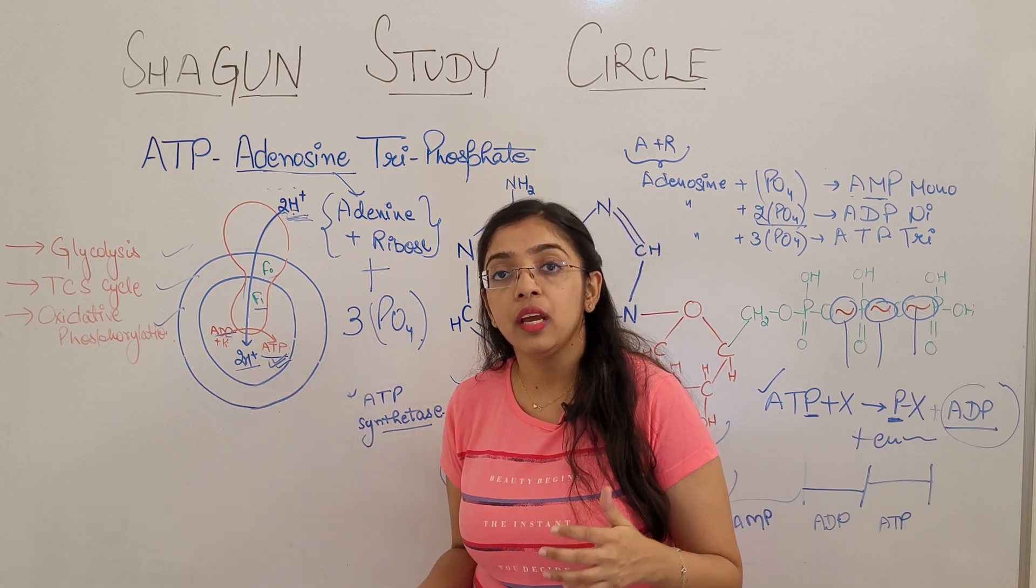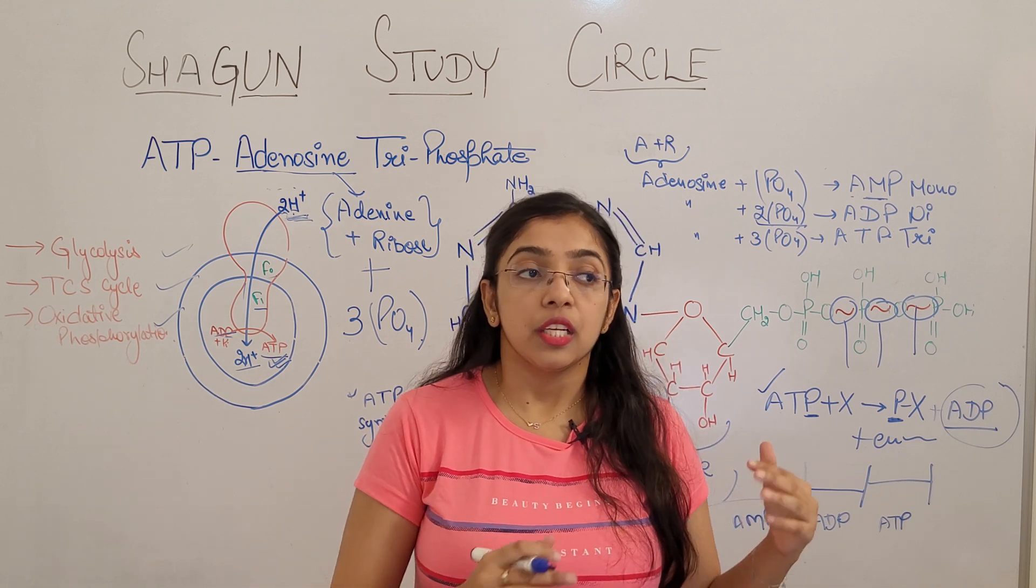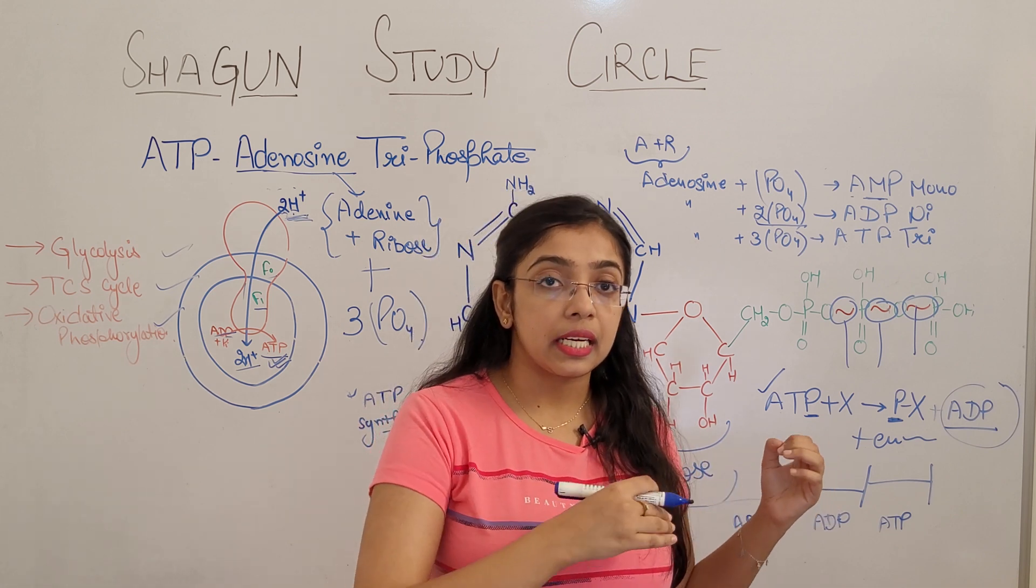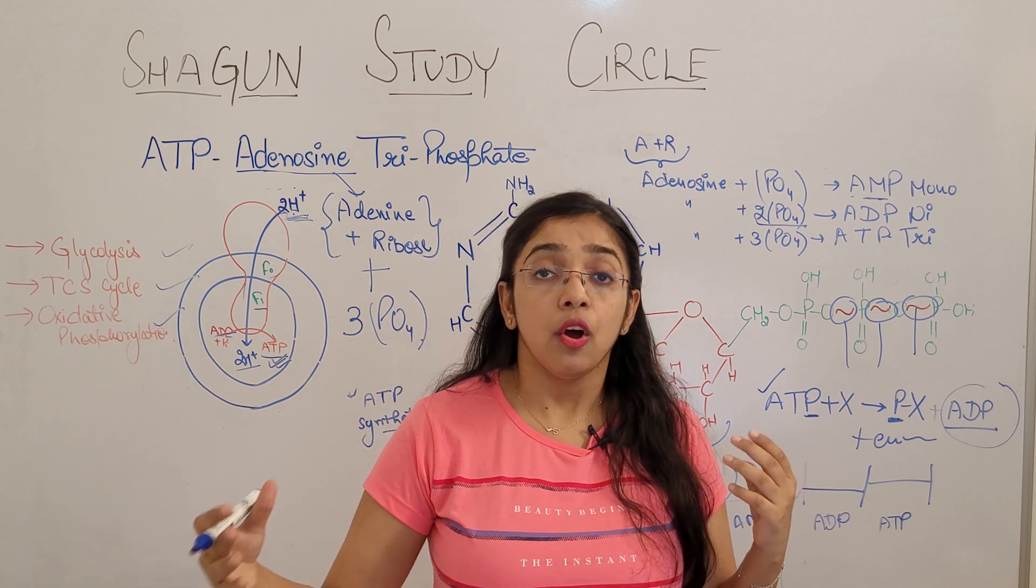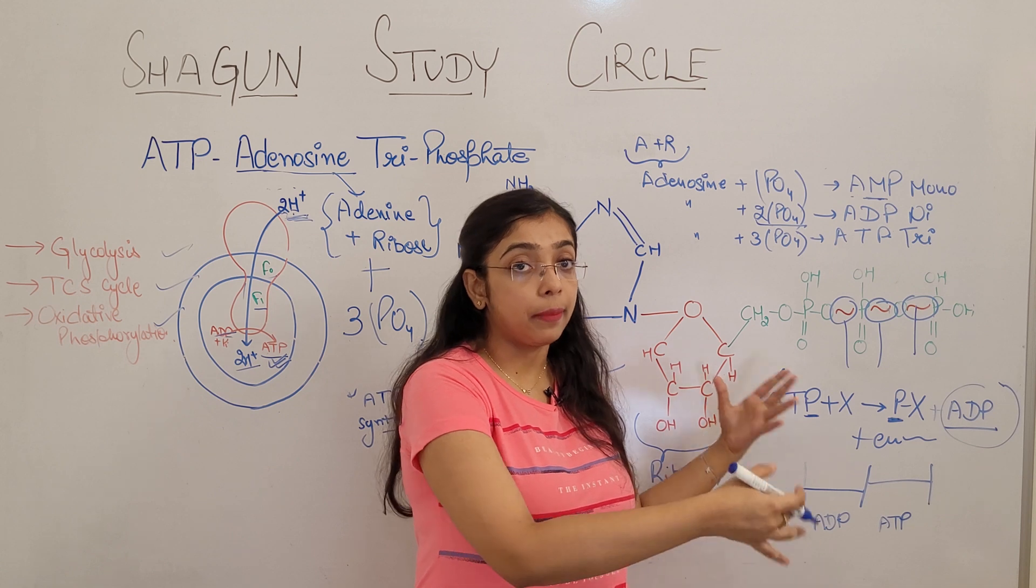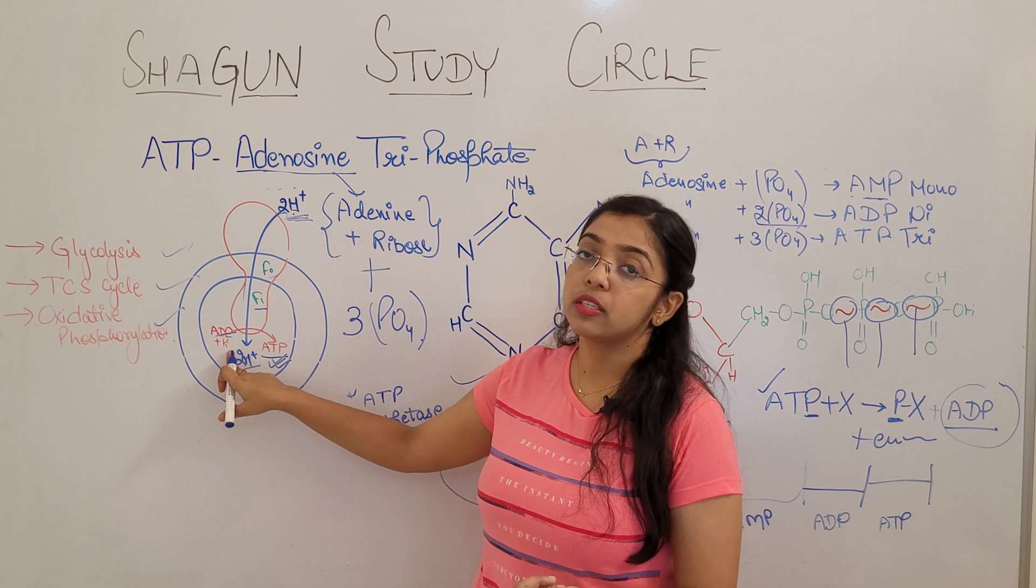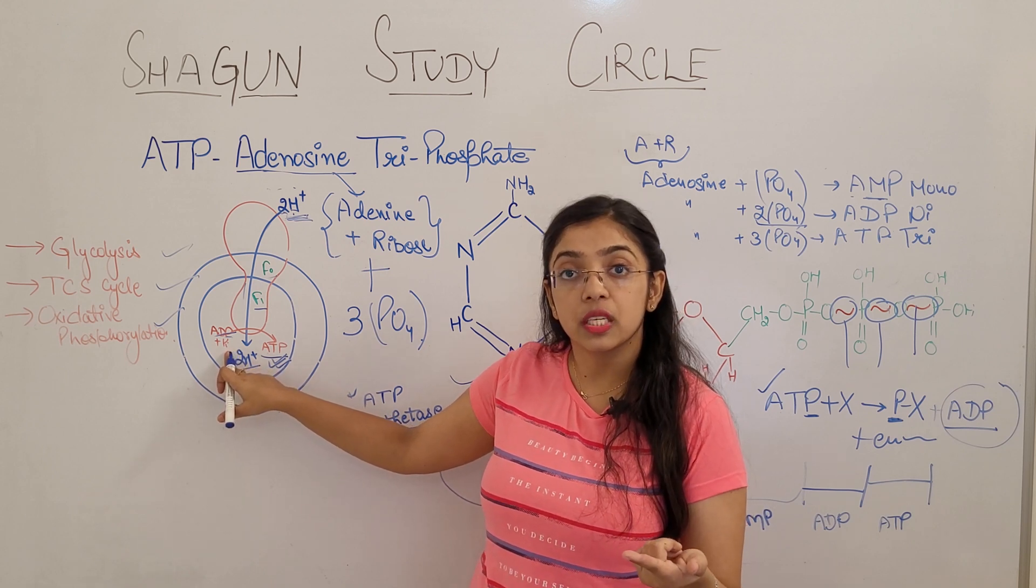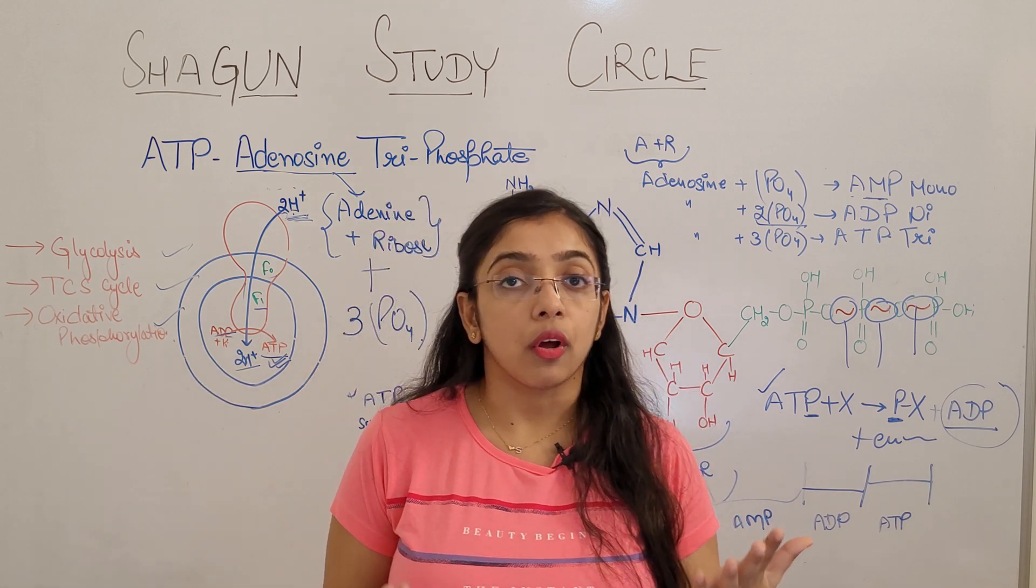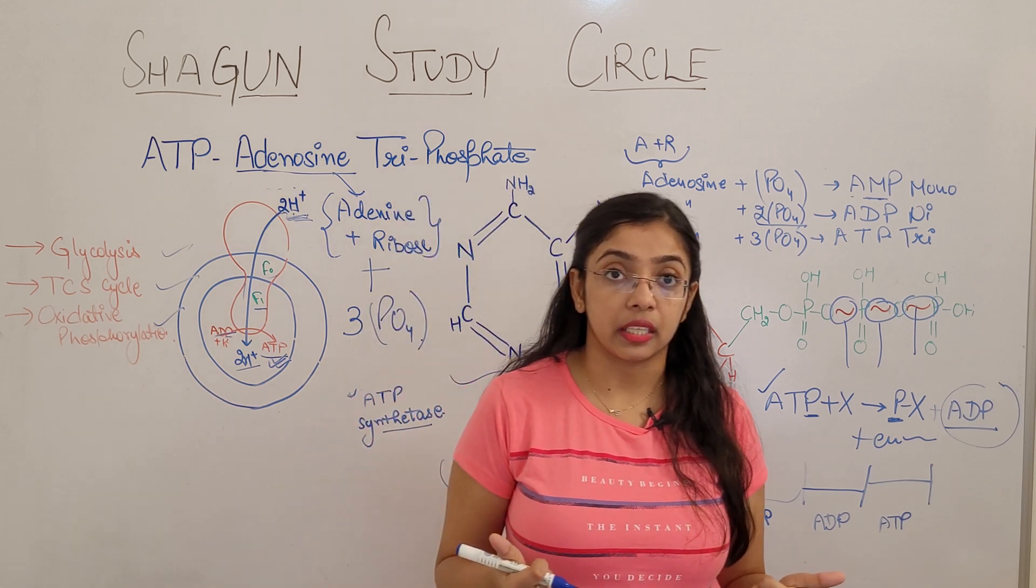Now ATP movement happens from high concentration to low concentration through the process of diffusion. Wherever there is requirement of ATP, where there is low concentration, ATP goes there. And ATP releases energy in this form: it gives one phosphate molecule, forms a complex, and becomes ADP. Then again ADP joins with phosphate because of this potential difference and forms ATP. So this cycle keeps on going. Now ATP is also used in the sodium potassium pump, where it acts as an active ingredient.